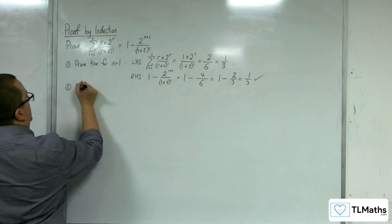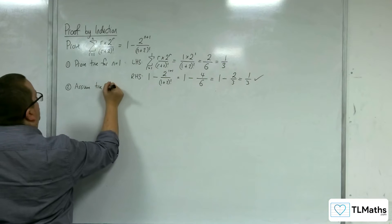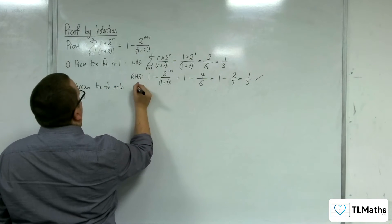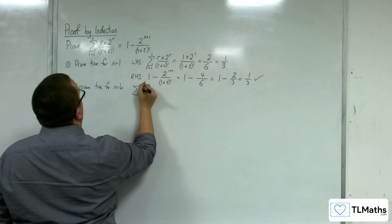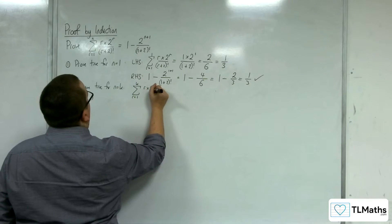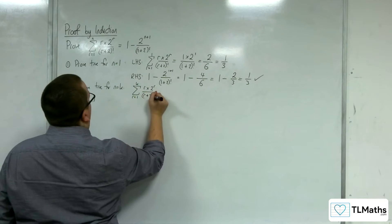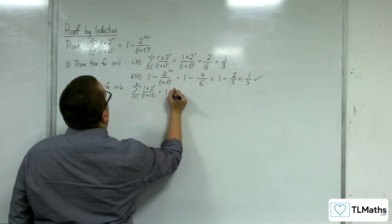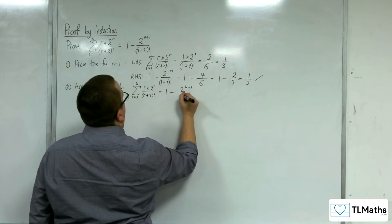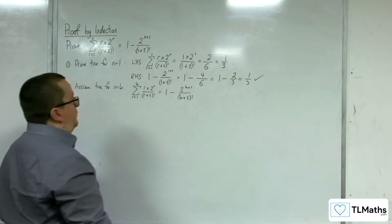Step 2: assume that it's true for n equals k. So the summation from r equals 1 to k of r times 2 to the r over (r plus 2) factorial is equal to 1 minus 2 to the k plus 1 over (k plus 2) factorial. That's our assumption.